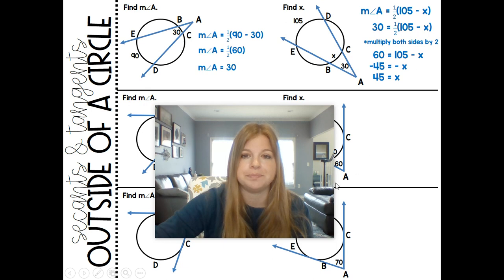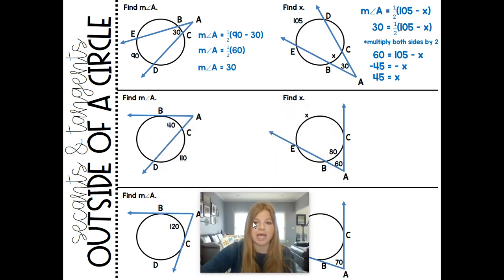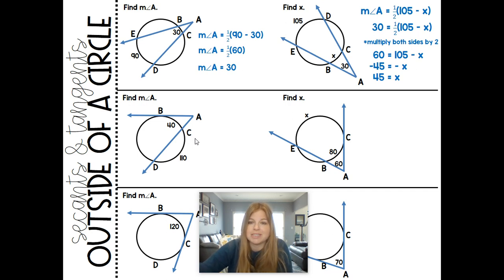Let's take a look at the next two, where we have a secant and a tangent, but it basically follows the exact same formula. So in order to find the measure of angle A, I'd have to do the outer arc minus the inner arc. Now notice I'm not given the outer arc. I am told this arc is 40, and this entire arc is 110. And since all of the arcs around a circle add up to 360, 40 plus 110 is 150. 360 minus 150 is 210. So the measure of angle A is one half of 210 minus 40, the outer arc minus the inner arc. 210 minus 40 is 170. Half of 170 is 85.